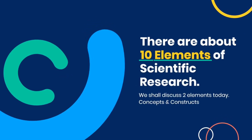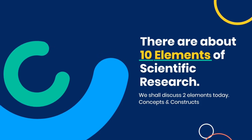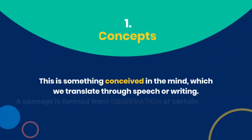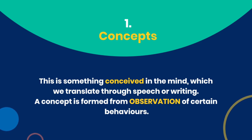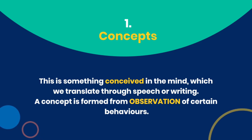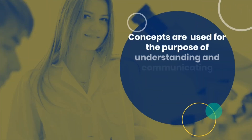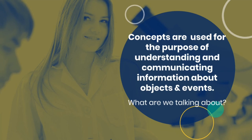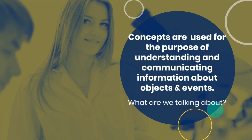There are about 10 elements of scientific research, but today we shall discuss two: concepts and constructs. A concept is something conceived in the mind — the building blocks of our thoughts which we translate through speech and writing. A concept is formed from observation of certain behaviors, and concepts are used for the purpose of understanding and communicating information about objects and events.